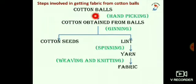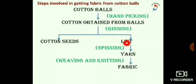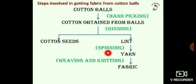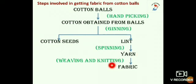Let us read the steps involved in getting fabric from cotton balls. The matured cotton balls are hand picked, and cotton seeds are separated from the fibers by the process of ginning. The fibrous material left after separating cotton seed is called lint — lint is nothing but fiber. The fiber obtained is spun into yarn by the process of spinning, and the yarn is converted into fabric by the process of weaving and knitting.